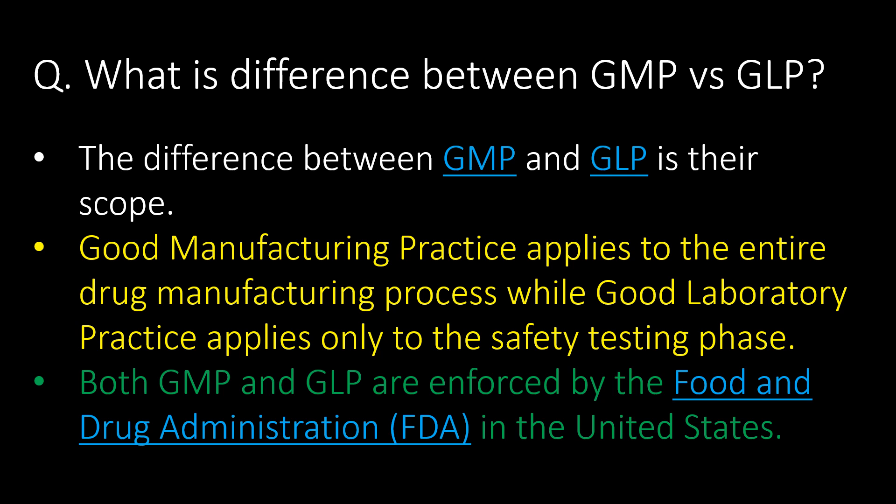What is the difference between GMP and GLP? The difference between GMP and GLP is their scope. Good manufacturing practice applies to the entire drug manufacturing process, while good laboratory practice applies only to the safety testing phase. Both GMP and GLP are enforced by the Food and Drug Administration in the United States.